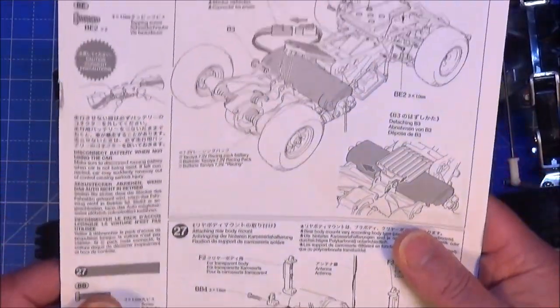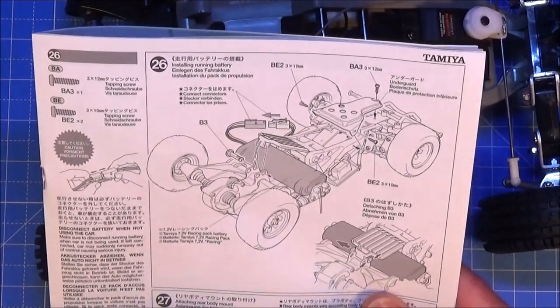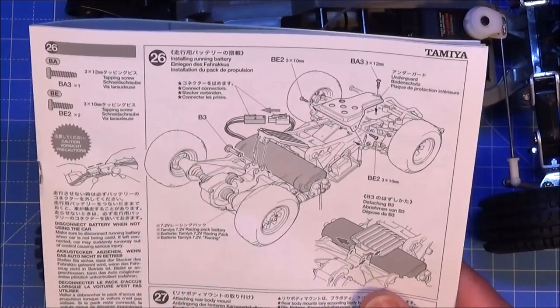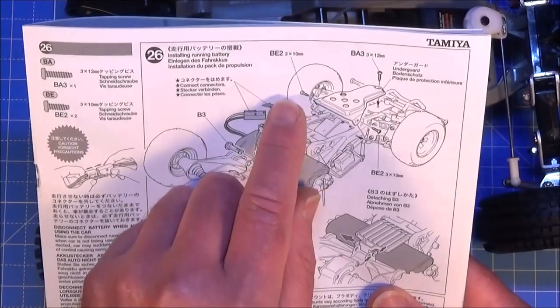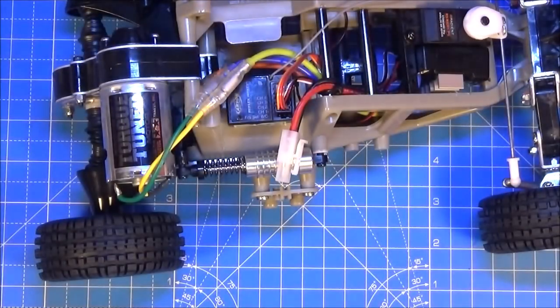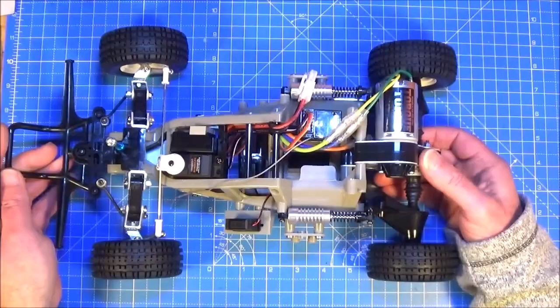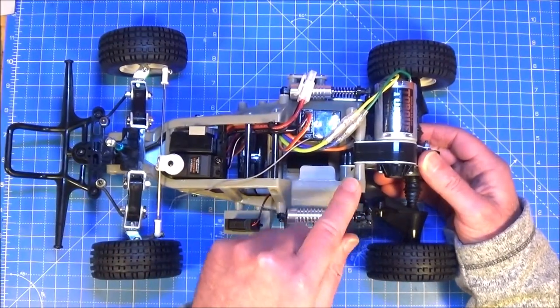Okay so the last thing I want to do which is going to finish off my build is just fit this under plate on here. And it just goes on with the 3x10 self-tapping screws. Sorry no, that's two 3x10s and one 3x12. It's just the rear body post to mount now and the aerial. But obviously I'll do those when I join on the bodywork.